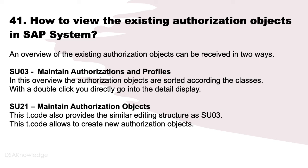How do you view existing authorization objects in the SAP system? An overview of existing authorization objects can be received in two ways. SU03 (Maintain Authorizations and Profiles): authorization objects are sorted by class, and a double-click goes directly to the detail display. SU21 (Maintain Authorization Objects): provides a similar editing structure. SU21 also allows creating new authorization objects.